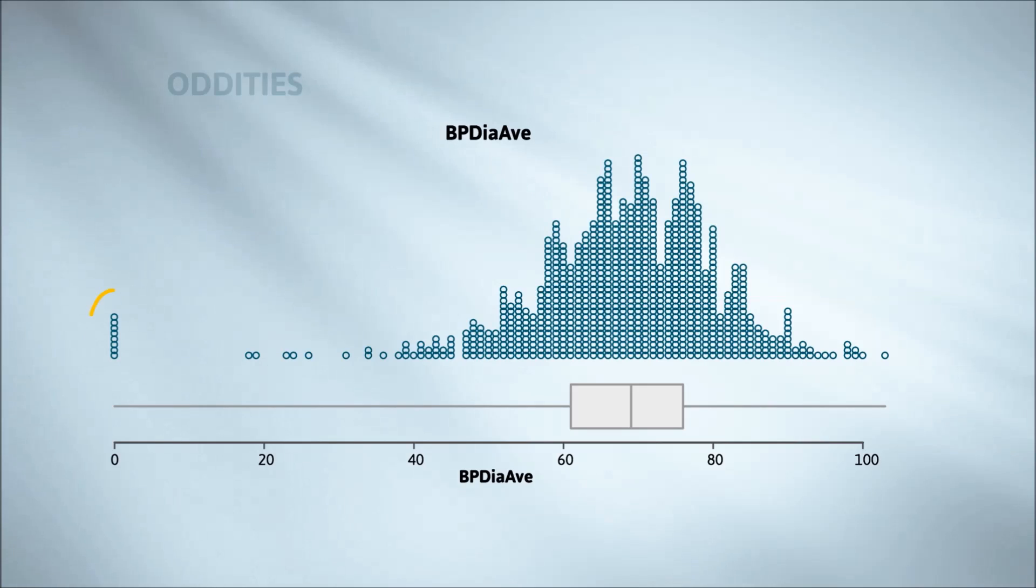As with this set of zero readings for diastolic blood pressure. Outliers are data points that are sufficiently far from the general pattern that they look suspect. Enough to make us worry, are these values real or are they mistakes?